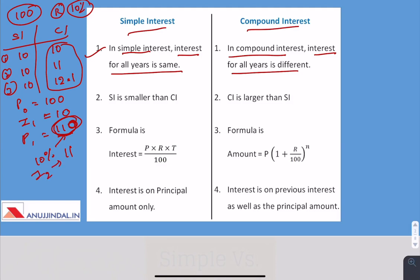Adding 11 to 110, our P2 becomes 121. Then 10% of 121 gives 12.1 as the third-year interest. This is the power of compounding. So this was the first point of difference. The second point is that simple interest is always smaller than compound interest, and compound interest is always larger than simple interest, as shown in this example.